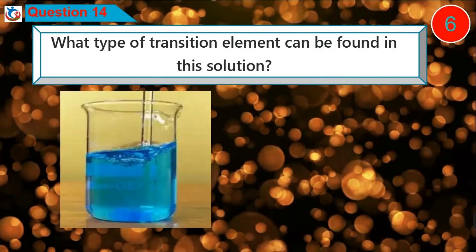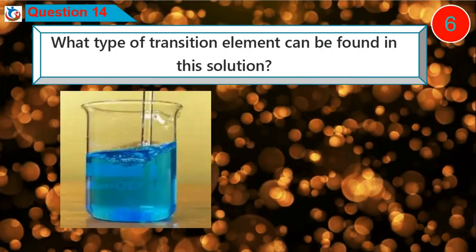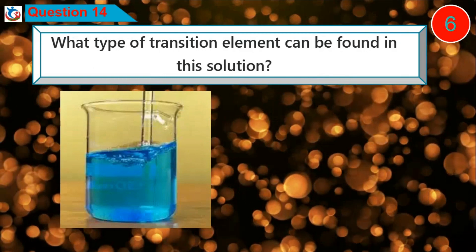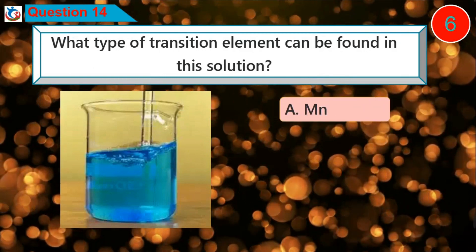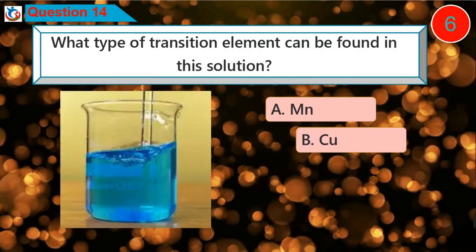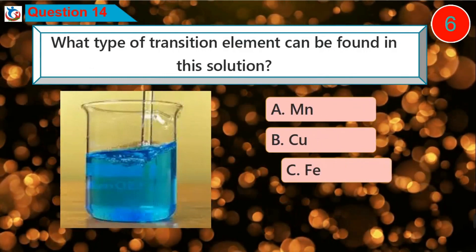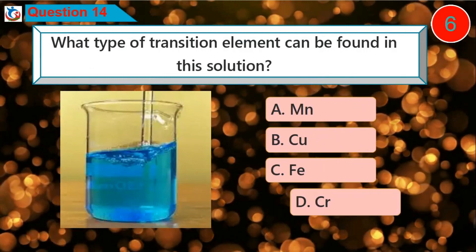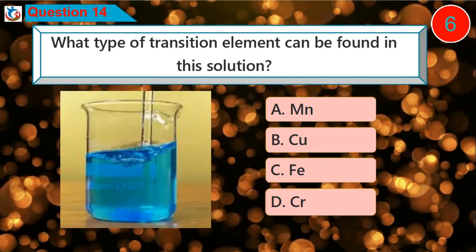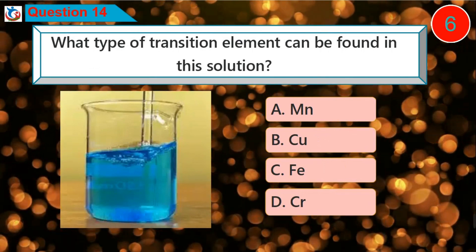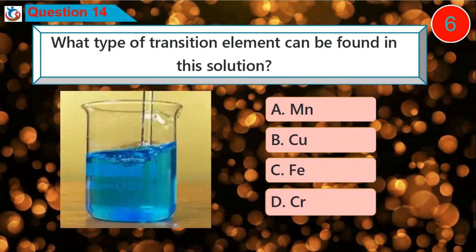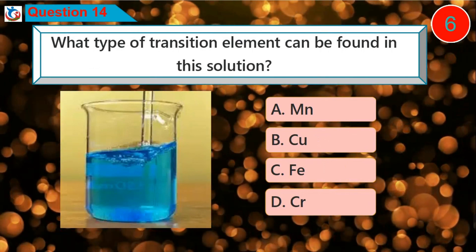Question 14: What type of transition element can be found in this solution? A. Manganese, B. Copper, C. Iron, D. Chromium.